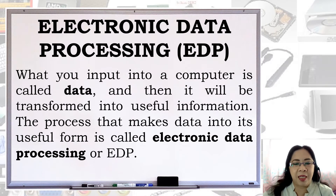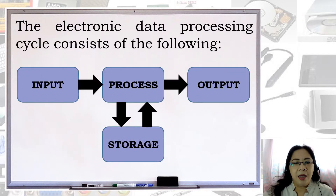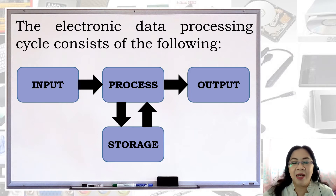What you input into a computer is called data, and then it will be transformed into useful information. The process that makes data into its useful form is called electronic data processing or EDP. The electronic data processing cycle consists of the following: Input, Process, Storage, then Output.